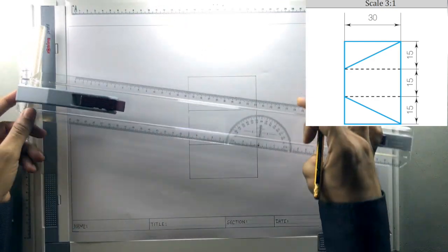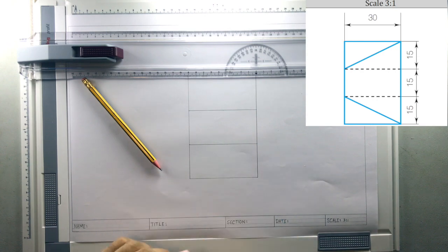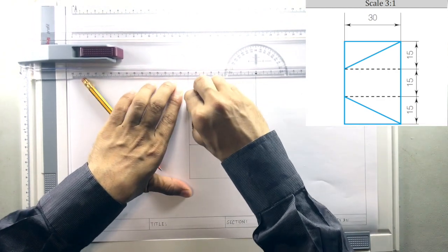We are done with all the lines. Now, these lines here, these two horizontal lines had to be dotted line. But by mistake, I have drawn it solid. It is okay. I can always erase.